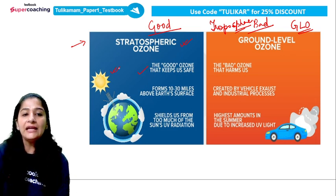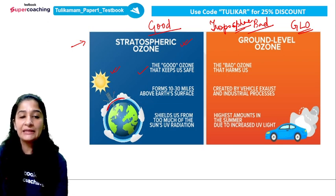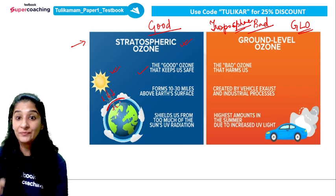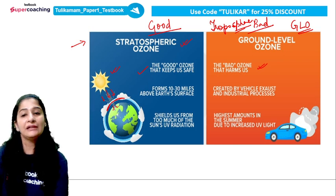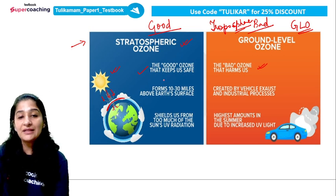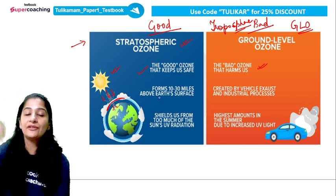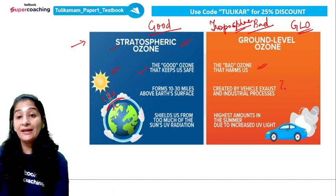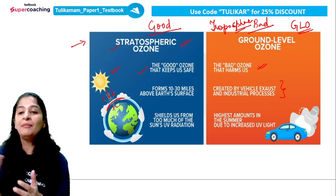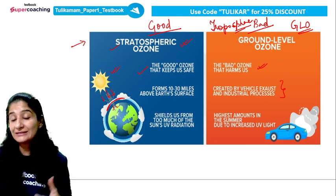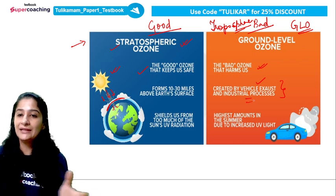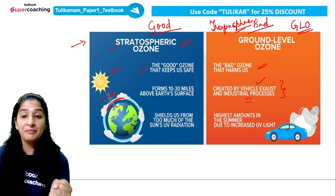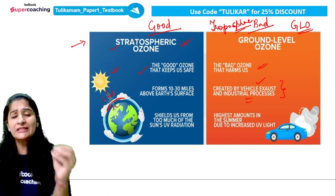This good ozone keeps us safe — safe from the sun's harmful UV rays. It forms a kind of layer so that any harmful UV rays falling on the Earth are filtered through it. The bad ozone, on the other hand, harms us if it enters the body — it can cause many fatalities and problems. Specifically, stratospheric ozone is found about 10 to 30 miles above the Earth's surface, and ground level ozone is created in the troposphere part of our atmosphere, mostly where there is heavy vehicle exhaust or emissions, or many industries.